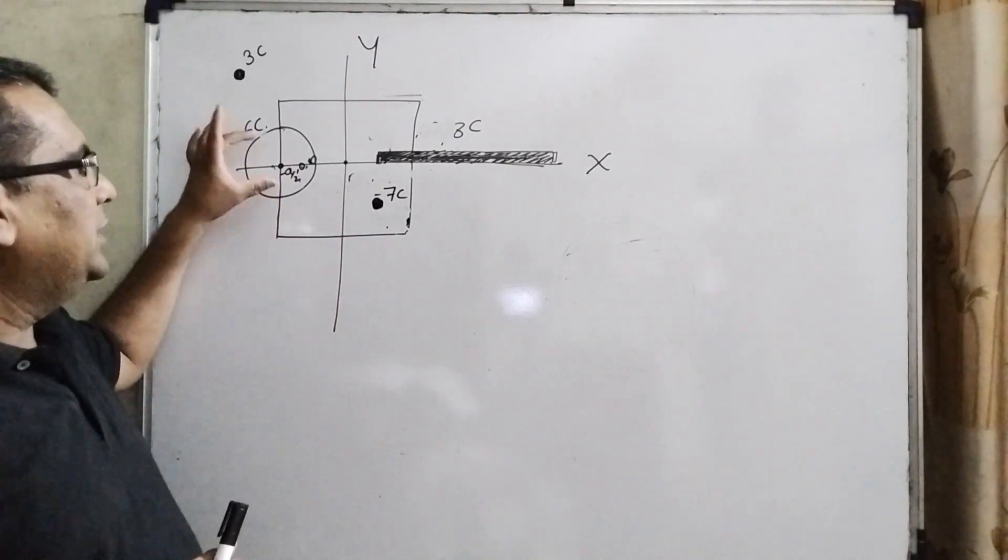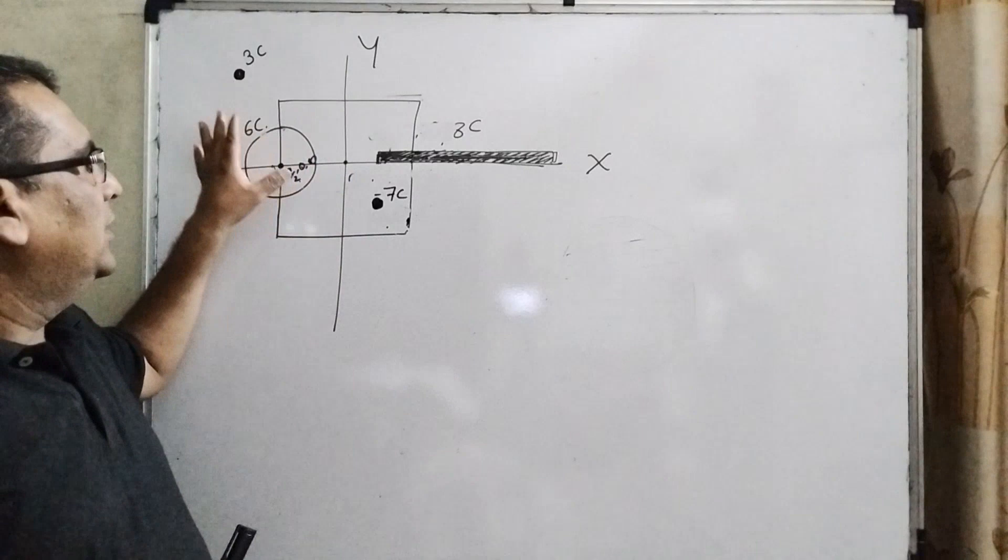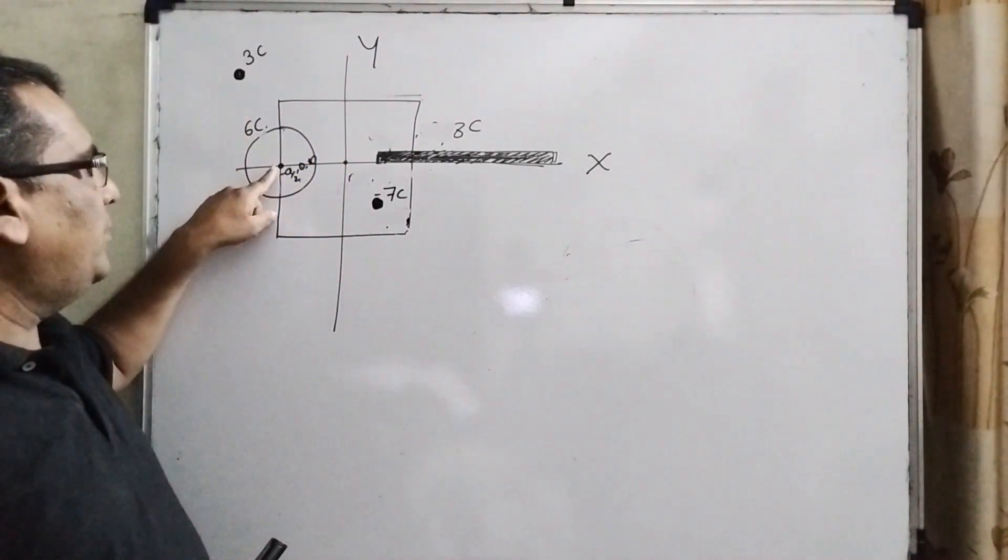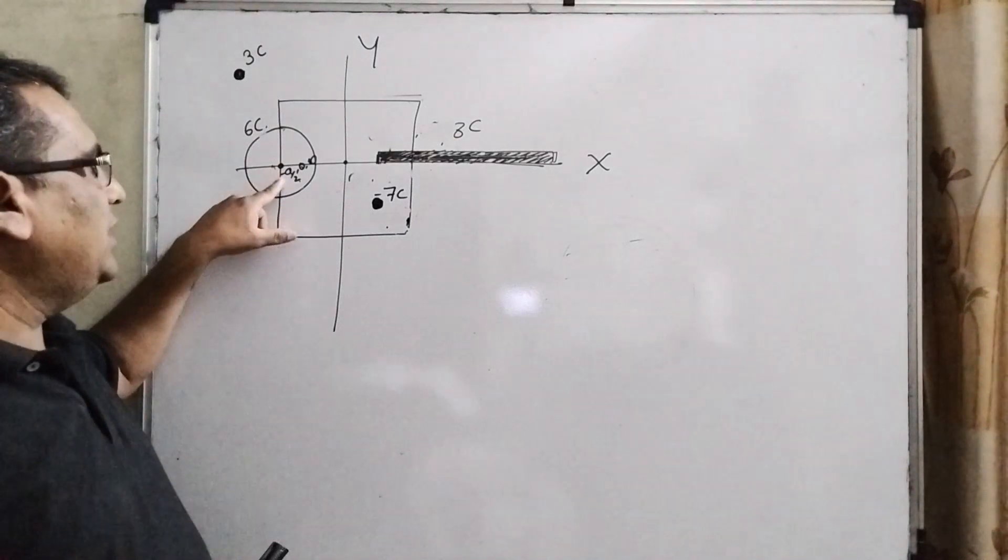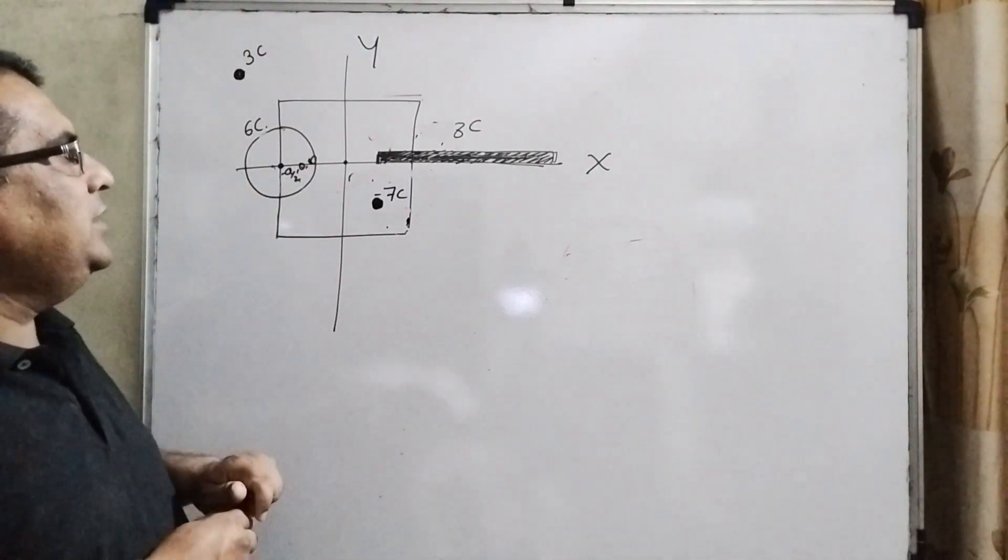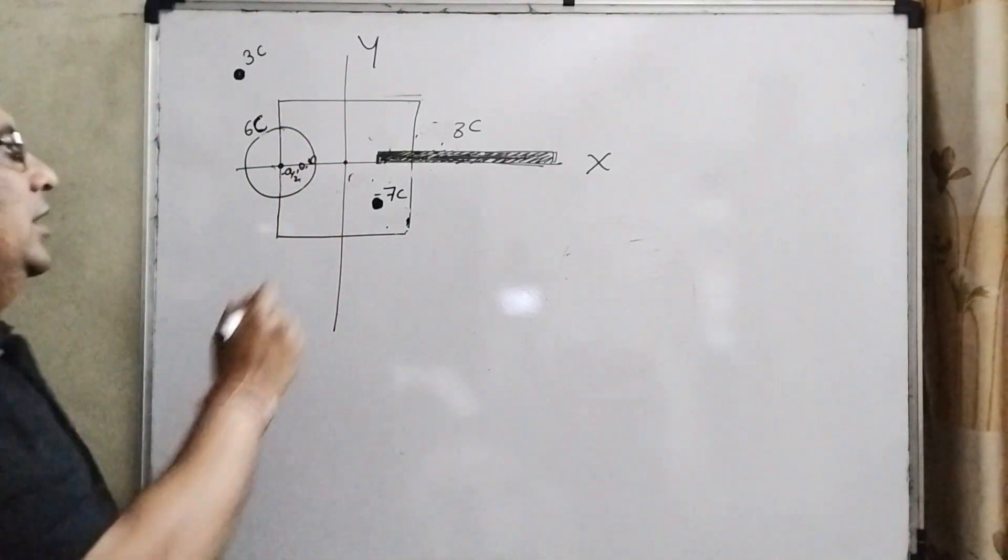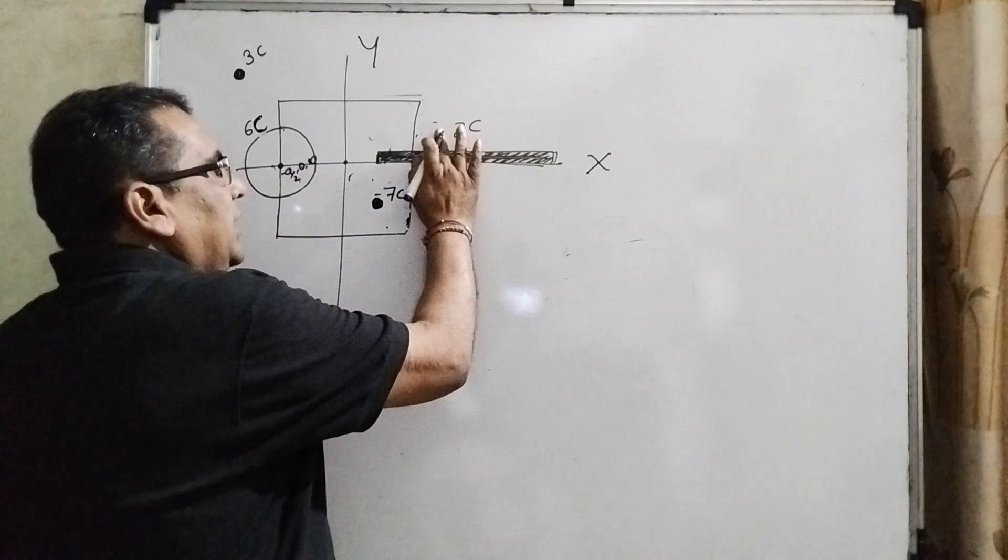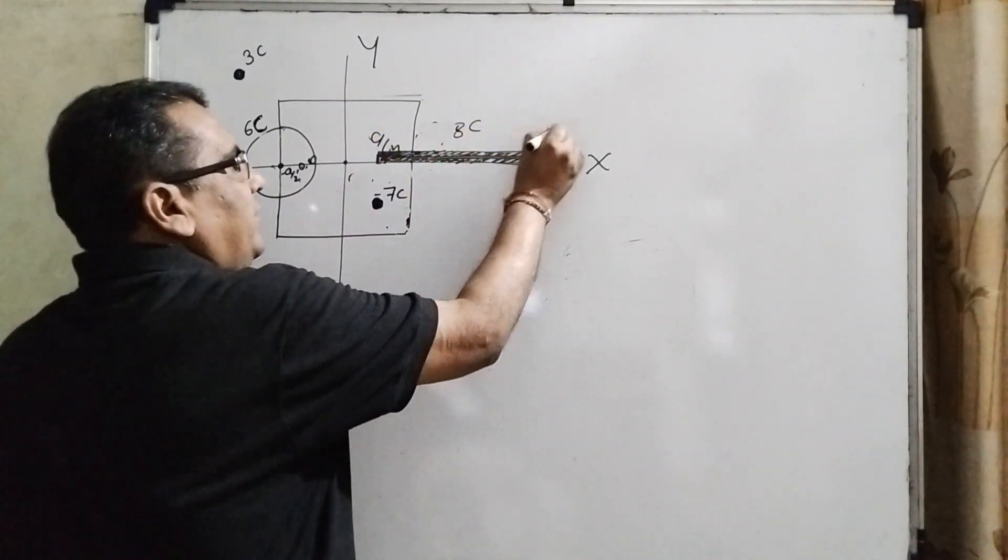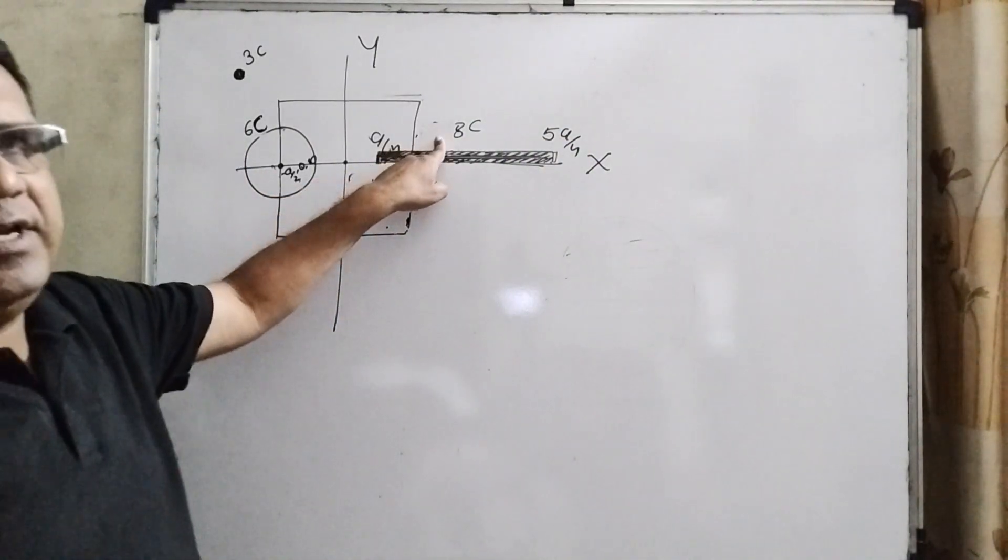You have given a disc, a rod, and two points. The location of the disc is—the central point of the disc is at -a/2, 0, 0, and the charge is given as 6C. And the rod, its one end is at a/4 and the other at 5a/4, and total charge is given as 8C.